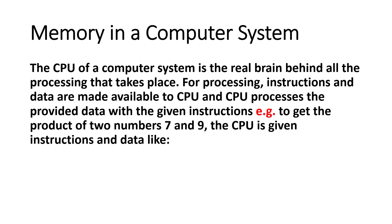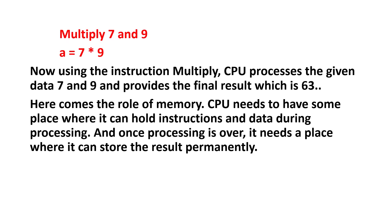For example, to get the product of two numbers — say 7 and 9. The CPU is given an instruction and data like: multiply 7 and 9, i.e., A = 7 × 9. Now using the instruction 'multiply,' CPU processes the given data 7 and 9, and provides the final result which is 63.